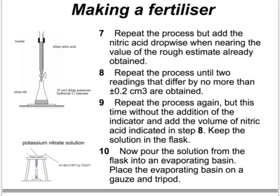Now we repeat the titration. We refill the burette with nitric acid and add a fresh 25 cubic centimetres of potassium hydroxide alkali into the flask — but this time with no indicator. Because we now know exactly how much acid is needed, we simply run in that same volume of nitric acid, giving us a neutral solution of the salt: potassium nitrate and water.